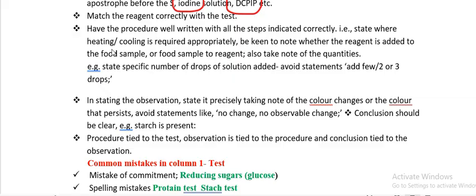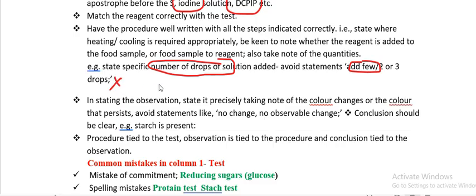When testing for starch, put the food solution in the test tube first, then add iodine solution. For vitamin C, it is the opposite — put DCPIP in the test tube first, then add your food solution. When noting quantities, state a specific number of drops. Avoid statements like 'add a few' or 'add 2 to 3 drops' — that is wrong, as it suggests you did not do the practical.